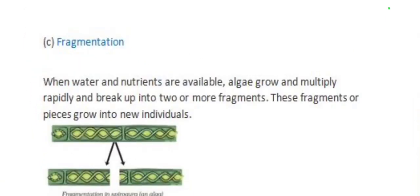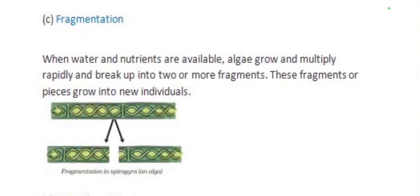The next method is fragmentation. When water and nutrients are available, algae grow and multiply rapidly and break up into two or more fragments. These fragments grow into new individuals. This type of reproduction is seen in Spirogyra.